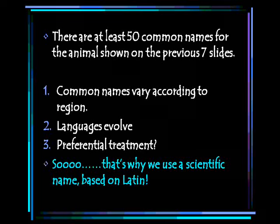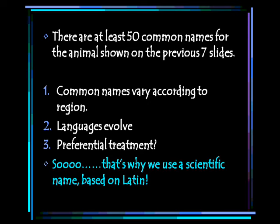Another reason is that languages evolve. The English that Shakespeare spoke is not really the same English spoken today. If a language is commonly used, it changes over time — different words take on different meanings — and we don't want the meaning of a scientific name to change over time. The third reason is that we don't want to give any particular culture or country preferential treatment in these namings. Just because you live in a specific region of the world doesn't mean the scientific name should be in your language. That's why we use scientific names based on Latin, for those three primary reasons.